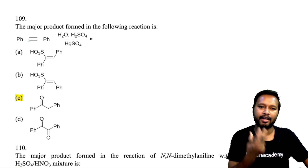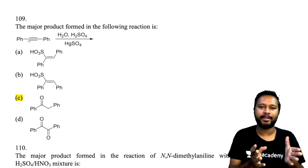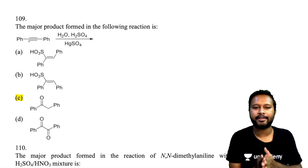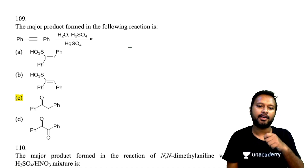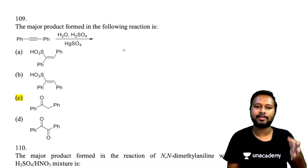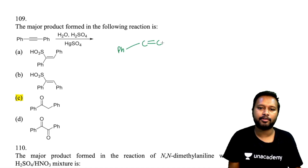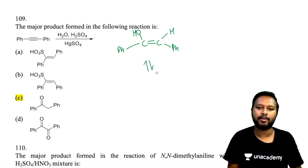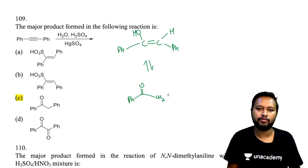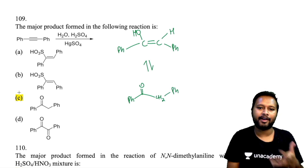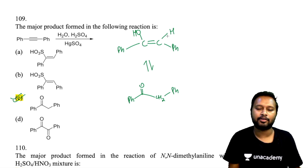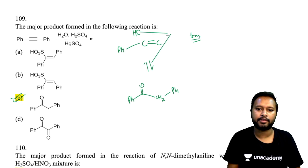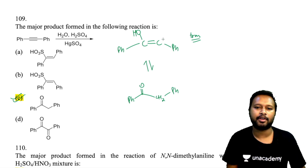Question 109: major product from treating a symmetric alkyne (Ph–C≡C–Ph) with H₂O/H₂SO₄/HgSO₄ (acid-catalyzed hydration). The enol formed undergoes keto-enol tautomerization to give a ketone: Ph–CO–CH₂–Ph. Since the molecule is symmetric, regiochemistry is not an issue. The addition is trans (not cis). Final product is option C.